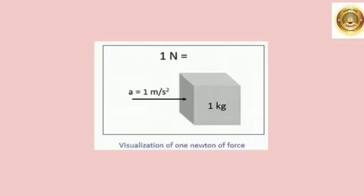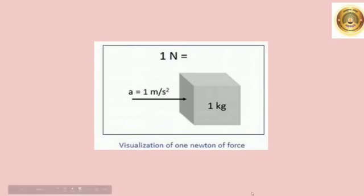Now, let us see the unit of force. Suppose you place a 1 kg standard unit on a surface with no friction and pull it with an acceleration of 1 m per second squared. The force applied here is what is called 1 N.